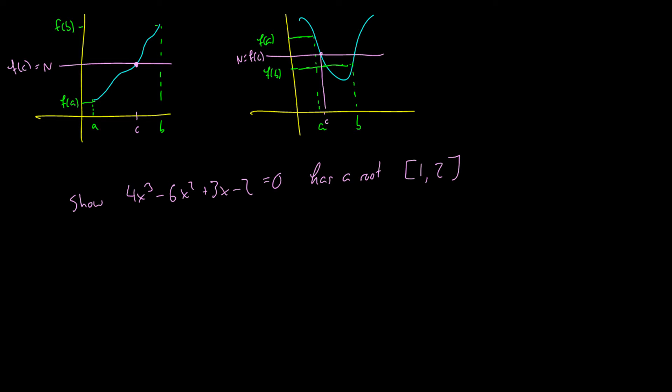Okay, so what we do is we evaluate the endpoints here. So we're going to evaluate f at that point and f at this point. So f(1) is going to be 4(1)³ - 6(1)² + 3(1) - 2 which is 4 - 6 + 3 - 2 which is going to equal to -1.